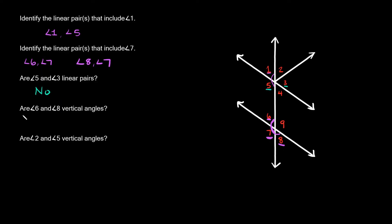Now: are angle 6 and angle 8 vertical angles? Remember, another way to think about vertical angles is as opposite angles. Here we have angle 6 and angle 8, and they're formed by the same two straight lines. So yes, are these opposite angles? Yes, they are — which means they're congruent angles.